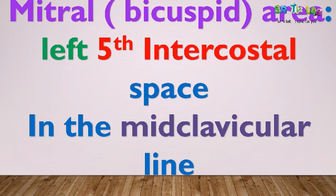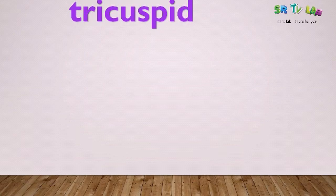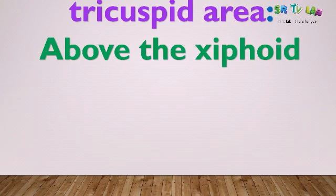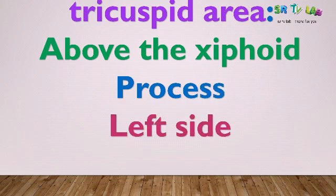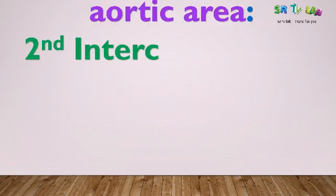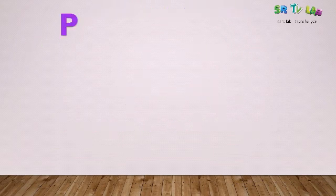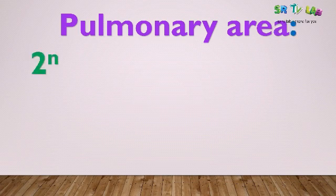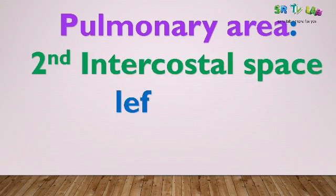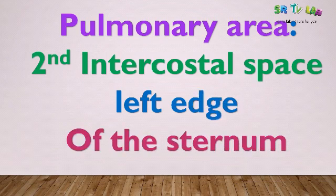The second area is the tricuspid area, which is just above the xiphoid process at the right side of the sternum. The third area is the aortic area, at the second intercostal space at the right edge of the sternum. The fourth is the pulmonary area, also at the second intercostal space but at the left edge of the sternum.